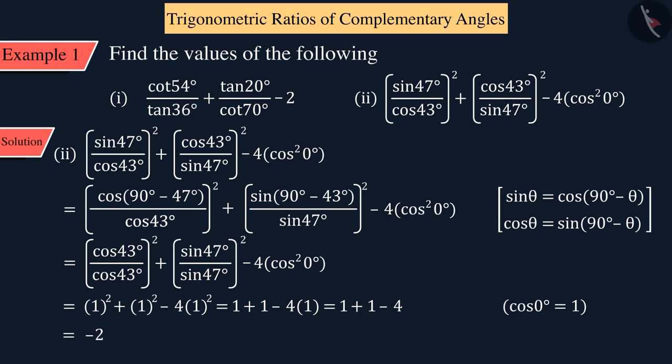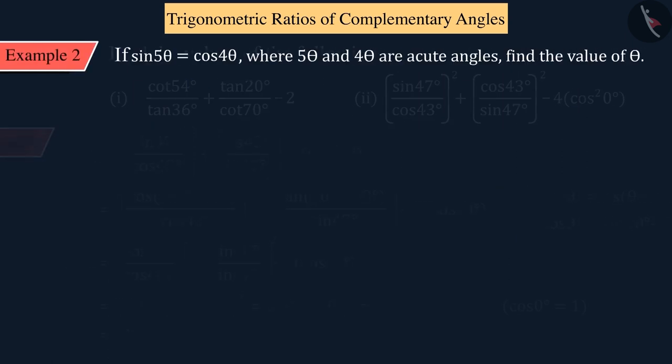Let's look at another example. If sin 5θ is equal to cos 4θ, can you find the value of θ where 5θ and 4θ are acute angles? Let's solve it. From the question, we can see that sin is on the left side and cos is on the right side.